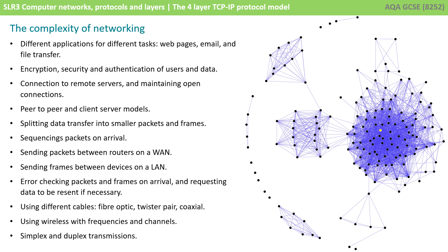We have to connect to remote servers and maintain those open connections whilst those servers are load balancing. We have peer-to-peer and client-server methods. We can split data into smaller packets and frames, and we can sequence those packets. We have to send packets between routers on a wide area network and send frames between devices on a local area network. We have to error-check the packets and frames on arrival and request the data be resent if necessary.